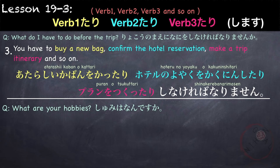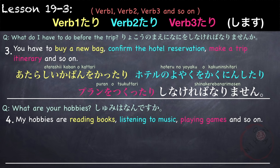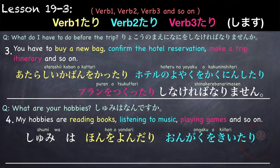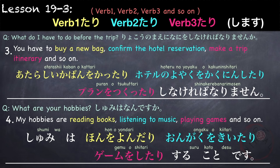And last example — if the question is: what are your hobbies? Shumi wa nan desu ka? If you have more than one hobby, you can list them using the tari tari form. For example, my hobbies are reading books, listening to music, playing games, and so on. Watashi no shumi wa hon wo yondari, ongaku wo kiitari, geemu wo shitari suru koto desu.